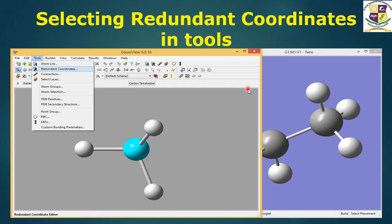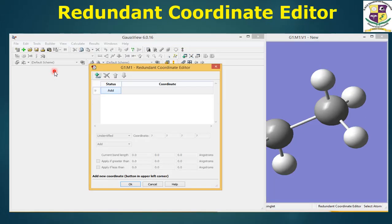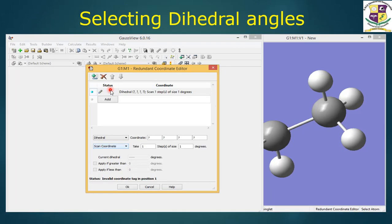To select the redundant coordinates in the tools - in the menu bar, there is an icon called tools in that we will navigate to redundant coordinates. Once navigated to redundant coordinates and it is selected, you will get redundant coordinate editor. In this we can click add.